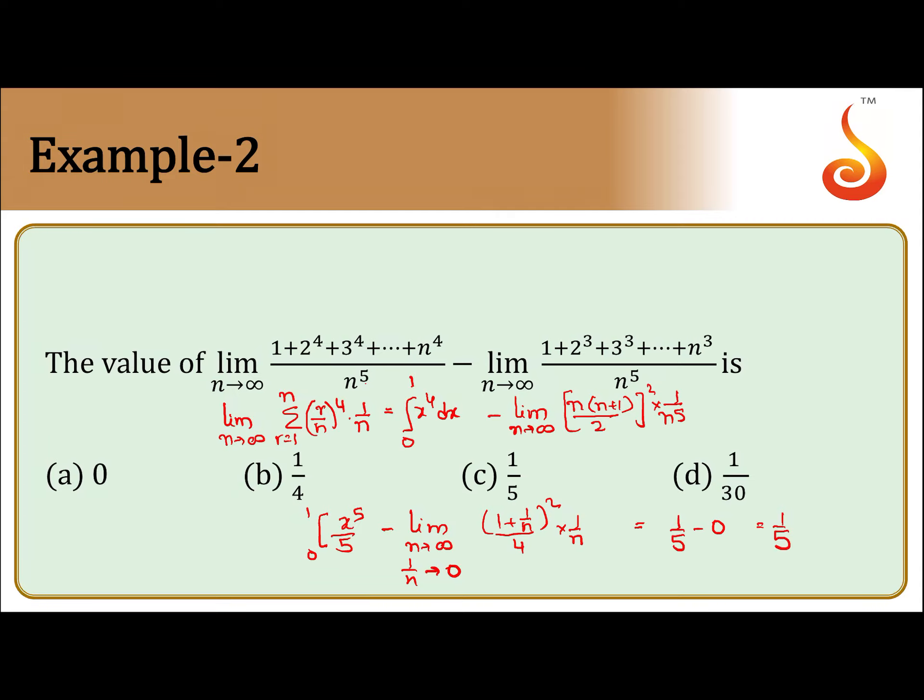Therefore, the limit value will give you 1 by 5 minus 0, which is resultant 1 by 5. So this limit value is coming out to be 0, so final answer is 1 by 5.